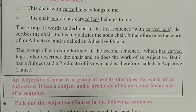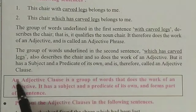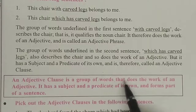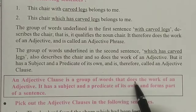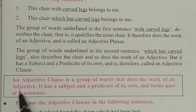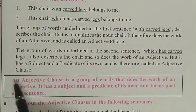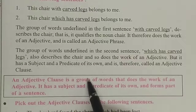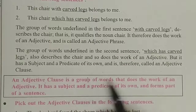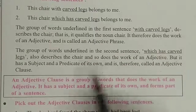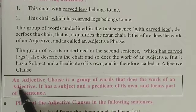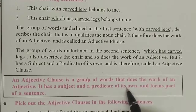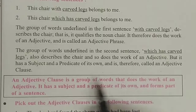Here, you see, an adjective clause is a group of words that does the work of an adjective. It has a subject and a predicate of its own.